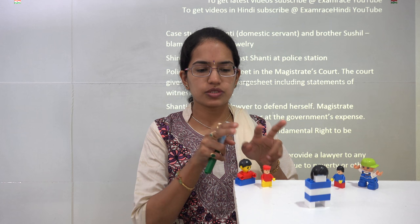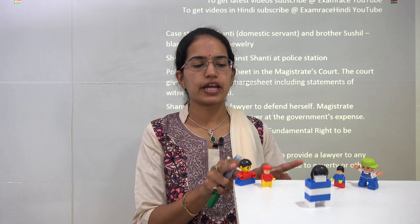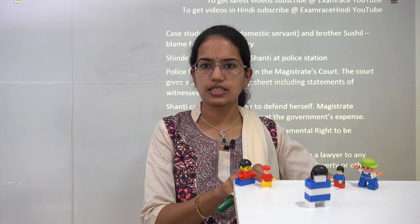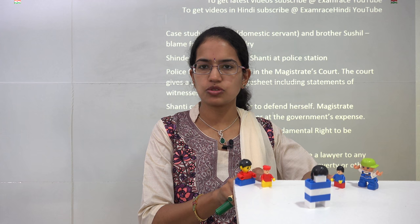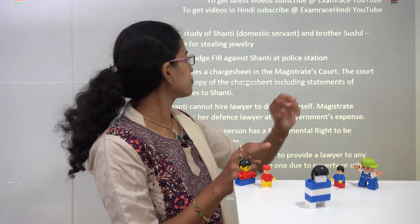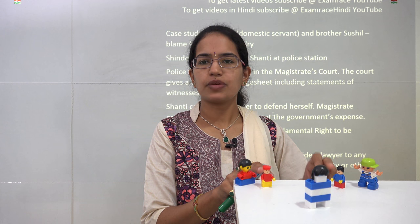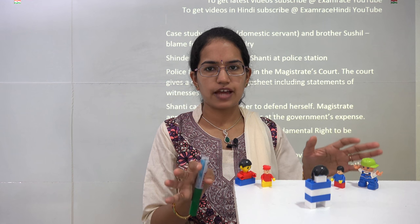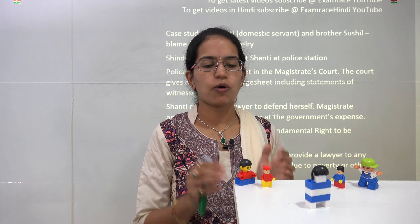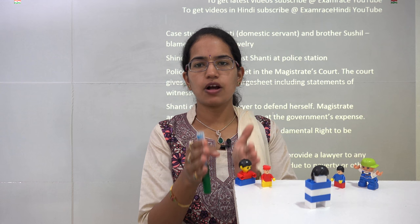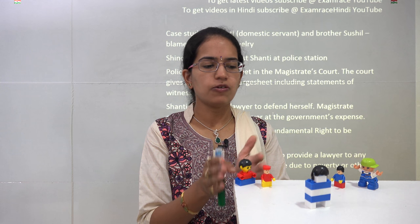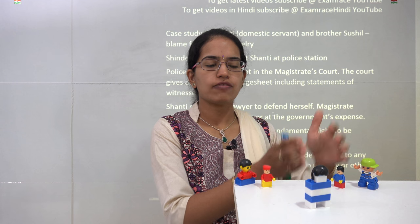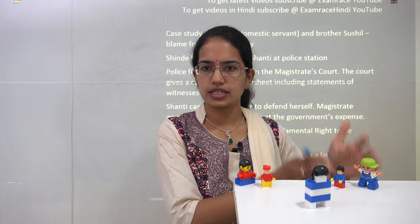Since a case was filed, you have the Shinde family and Shanti with her brother Sushil, both accused of stealing jewelry. The Shinde family hires a lawyer. However, since Shanti is poor and cannot afford one, a lawyer would be provided by the government.